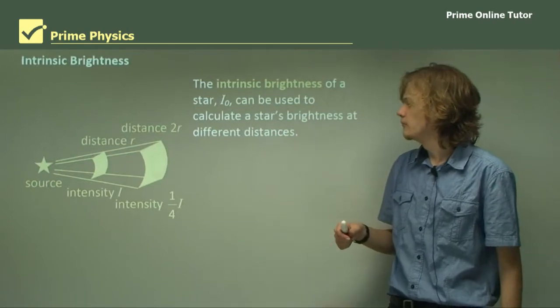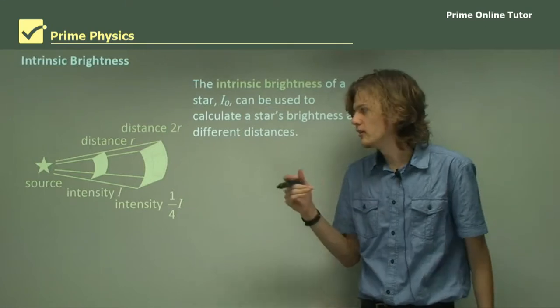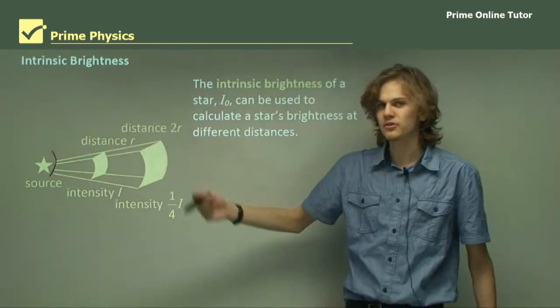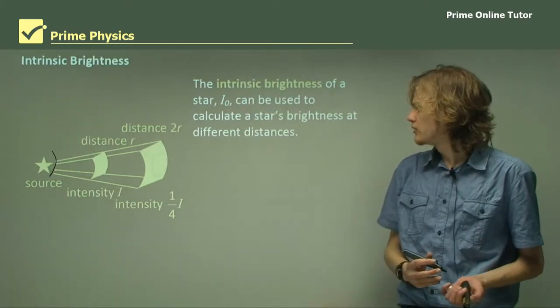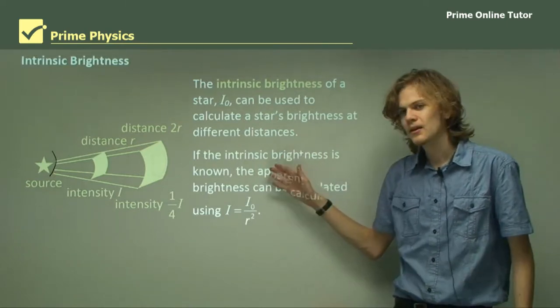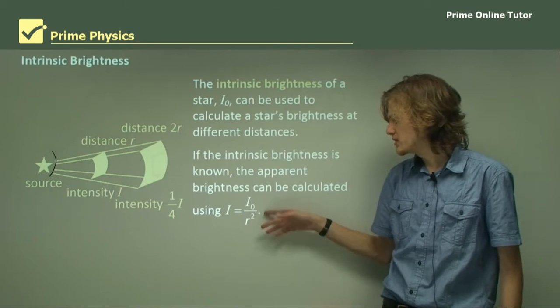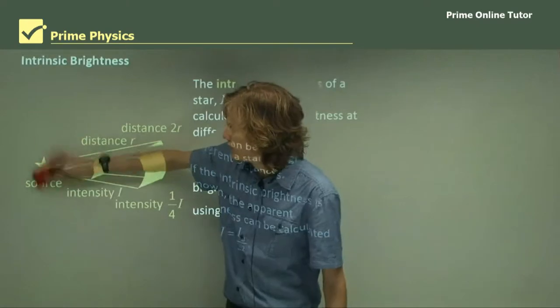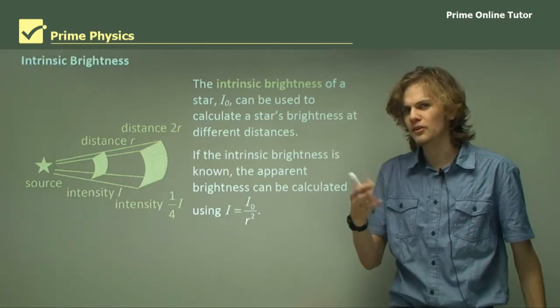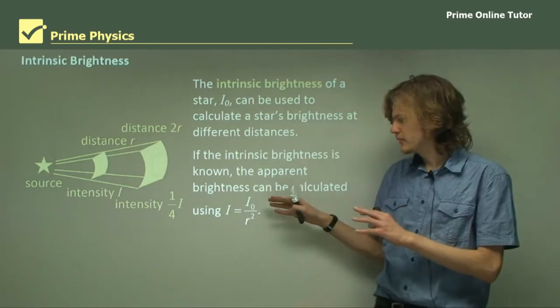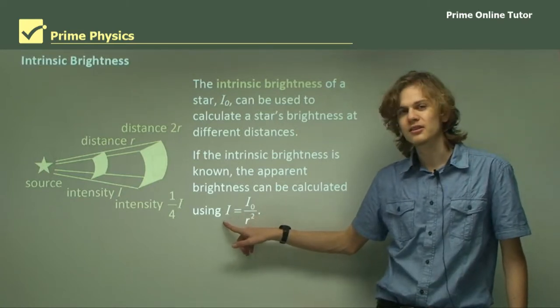The intrinsic brightness of a star, represented by i₀, can be used to calculate a star's brightness at different distances. The i₀ is the intensity when you're at a particular distance from it. If we know the intrinsic brightness, we can find the apparent brightness using I equals i₀ over r². The intrinsic brightness is also measured as an absolute magnitude. This is very useful because if we know both intrinsic and apparent brightness, we can calculate distance.